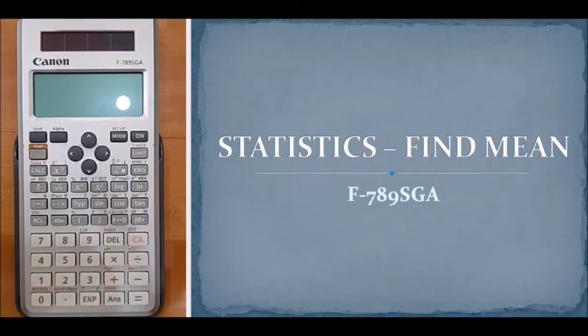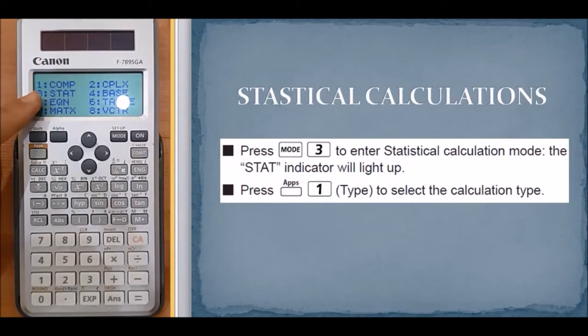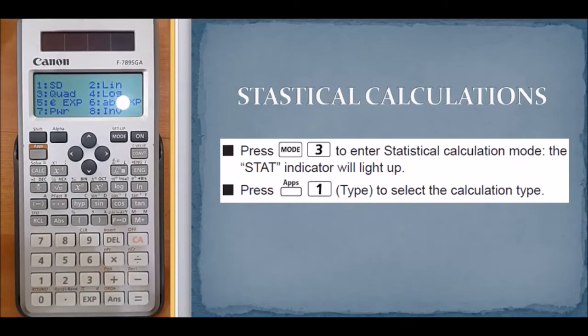There are eight types of statistical calculation. One SD, which stands for one variable.